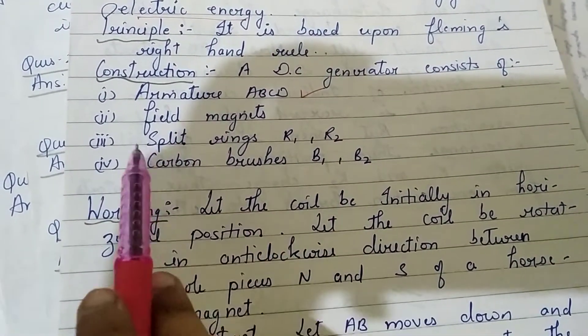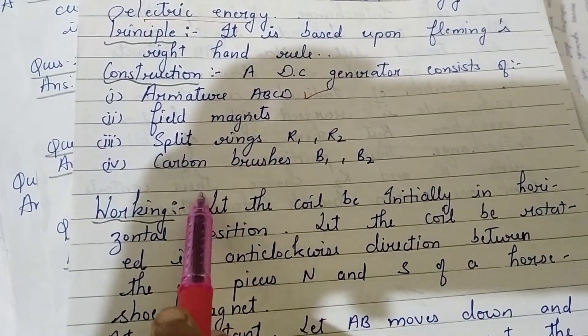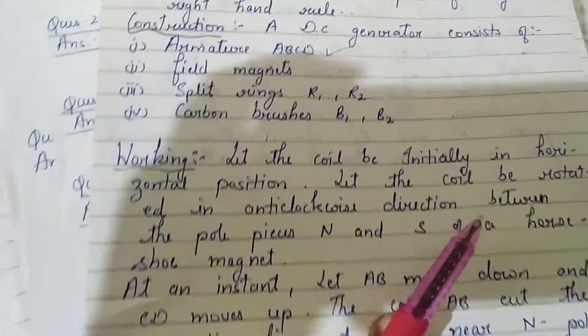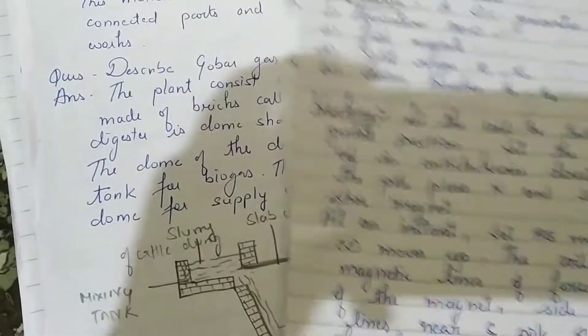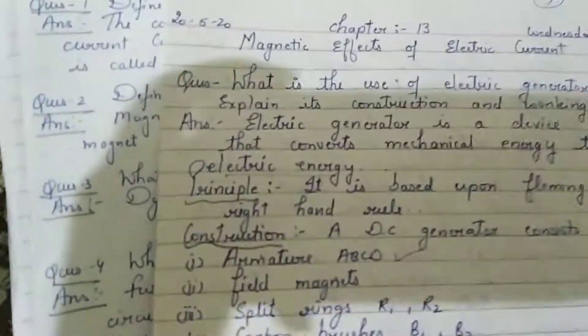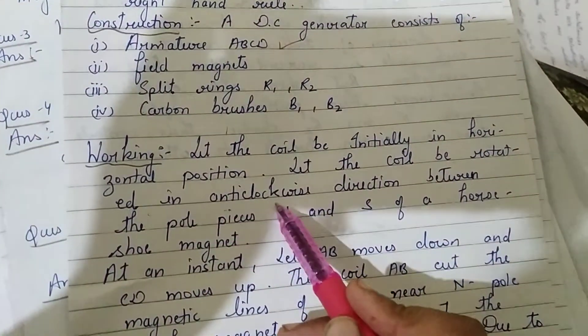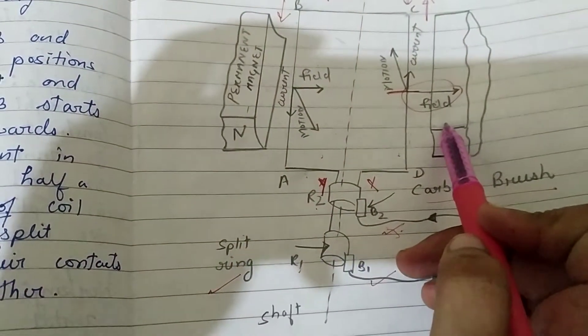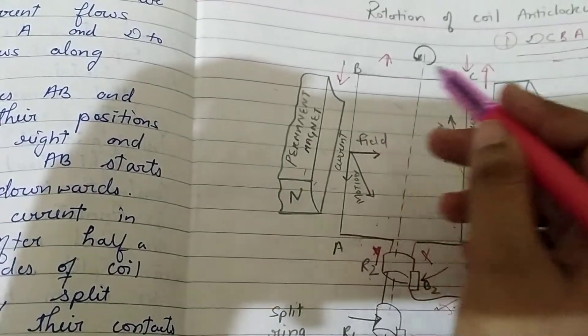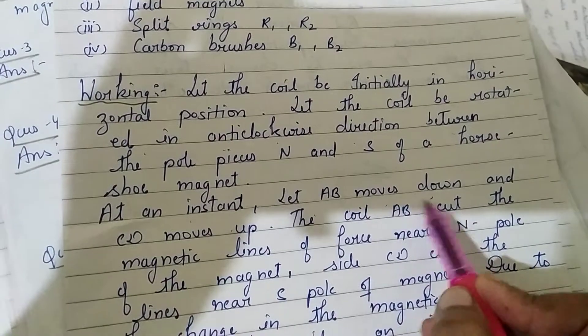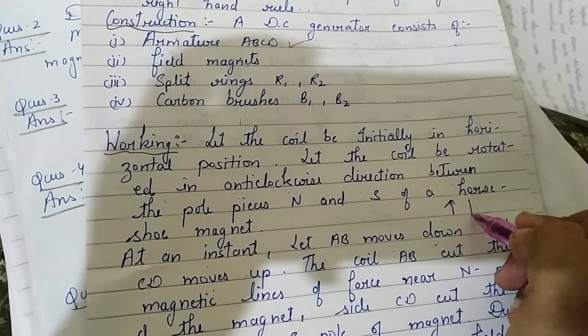Construction: A generator consists of armature, field magnets, and carbon brushes. Working: Let the coil be initially in horizontal position. Let the coil be rotated in anti-clockwise direction between the north and south poles of the horseshoe magnet. When you rotate it, at the instant let AB move down and CD move up.